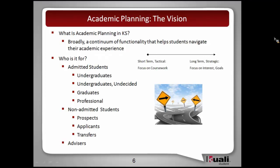Academic planning is primarily for admitted students, in descending order of relevance. It's probably most relevant for undergraduates and undecided undergraduates, but it's certainly something graduate students and professional students would want to take advantage of as well. Even though it's targeted primarily at admitted students, there's also a component for non-admitted students — prospects, applicants, and transfer students — who might want to look at how they can bring their prior learning to an institution. And then there's an advisor component of academic planning to help students in their planning process.